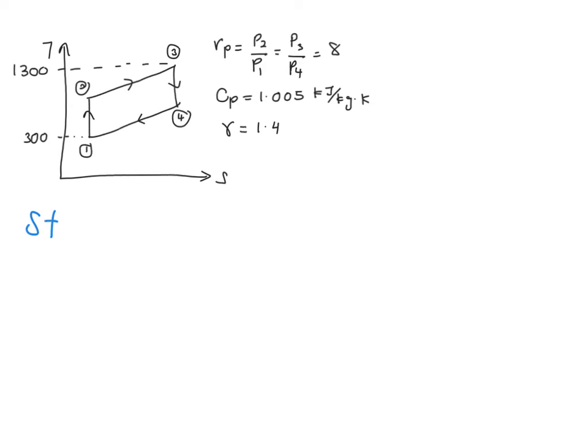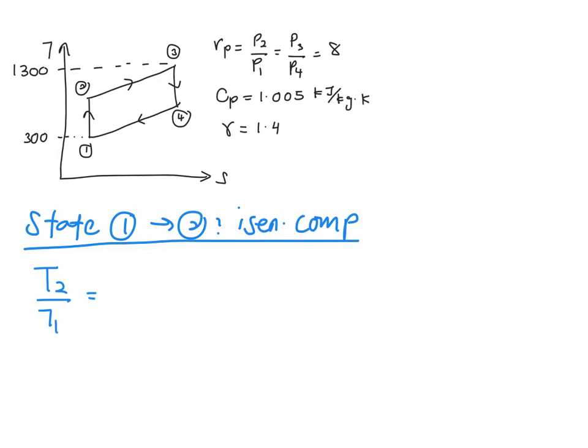Alright, so now we continue on how to solve this problem. You have state 1 to state 2, which is an isentropic compression. Basically, when you project to this time, your S1 must equal S2, and it is assumed to be an ideal Brayton cycle. So from the isentropic relation, you have T2 over T1 equals (P2 over P1) to the power of (gamma minus 1) over gamma.